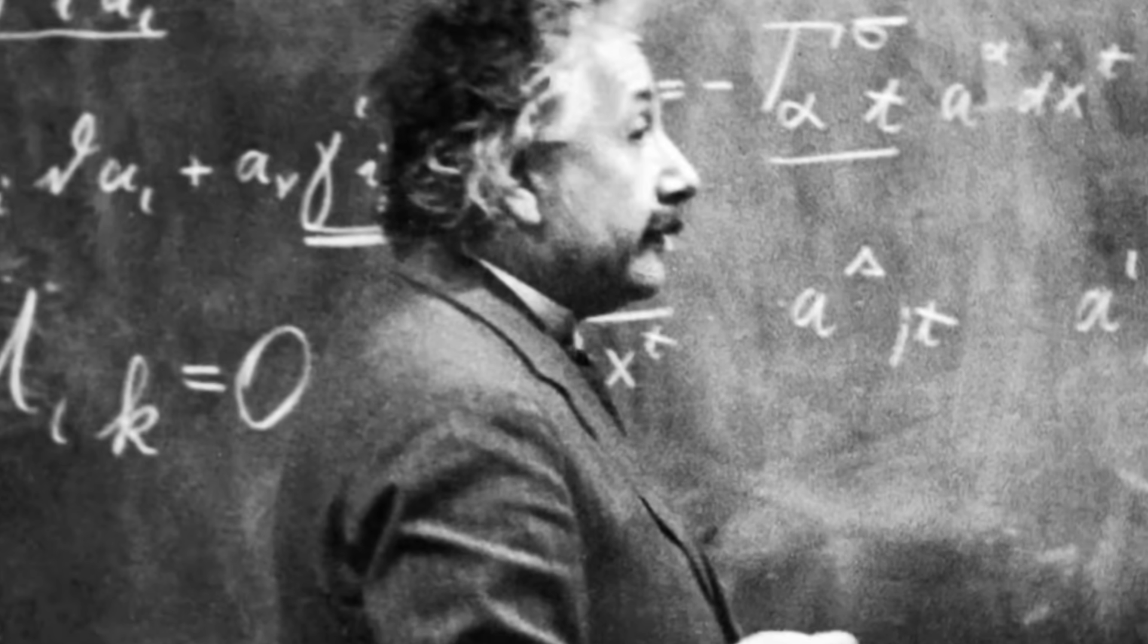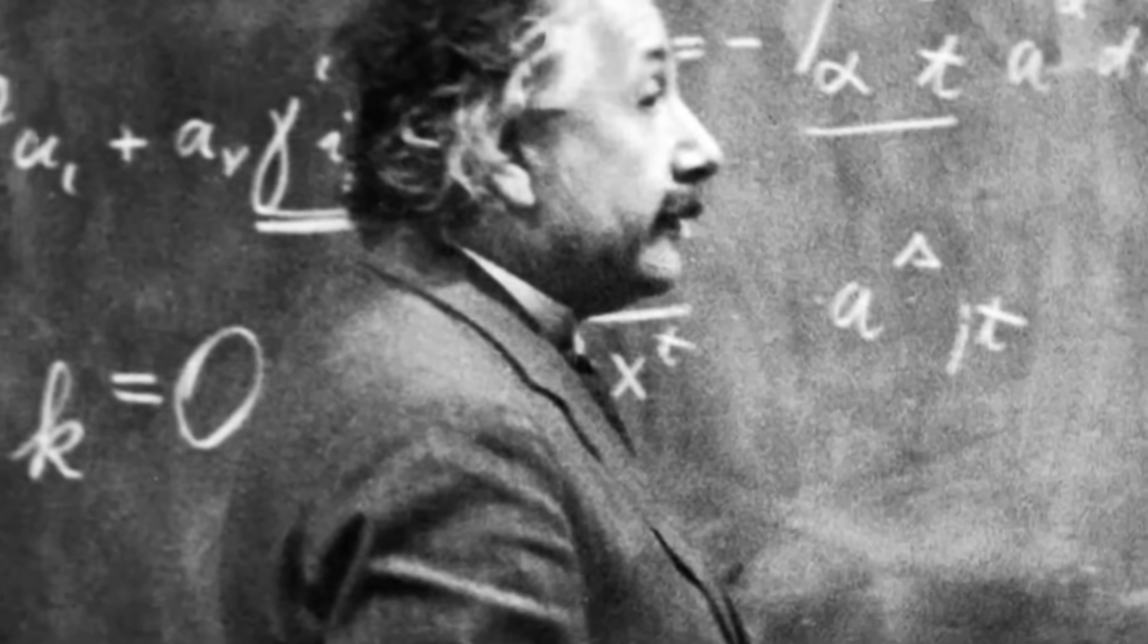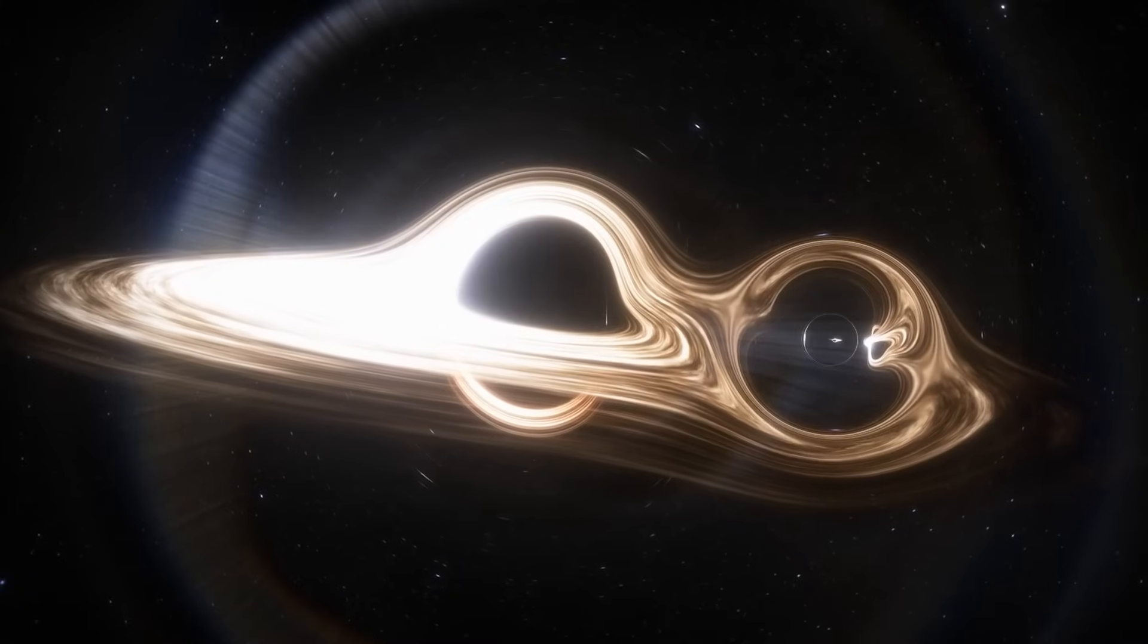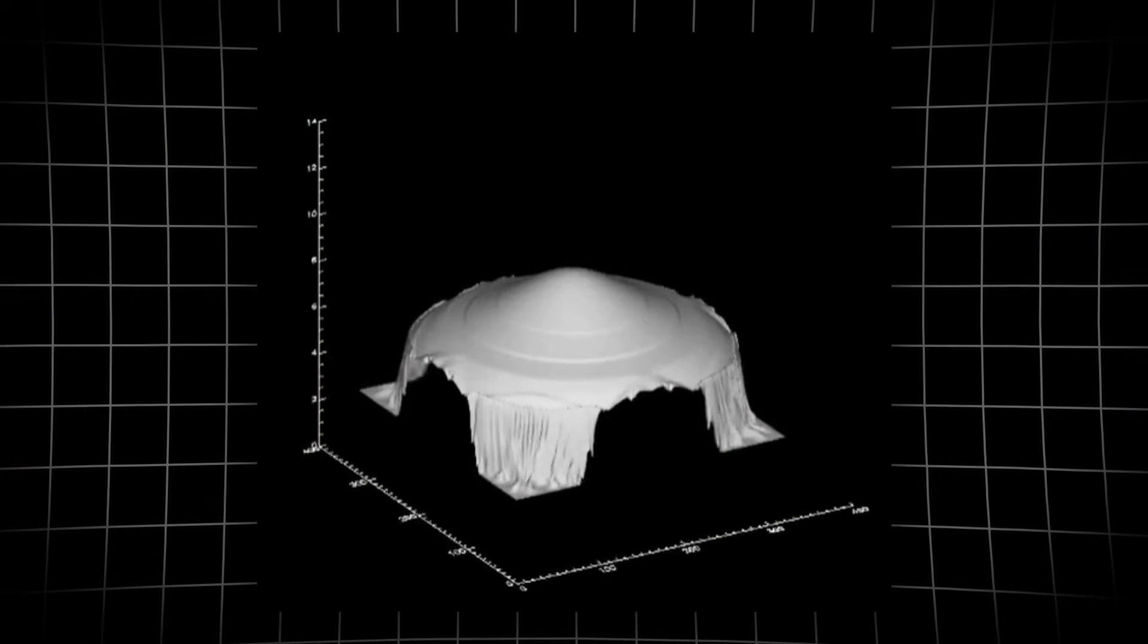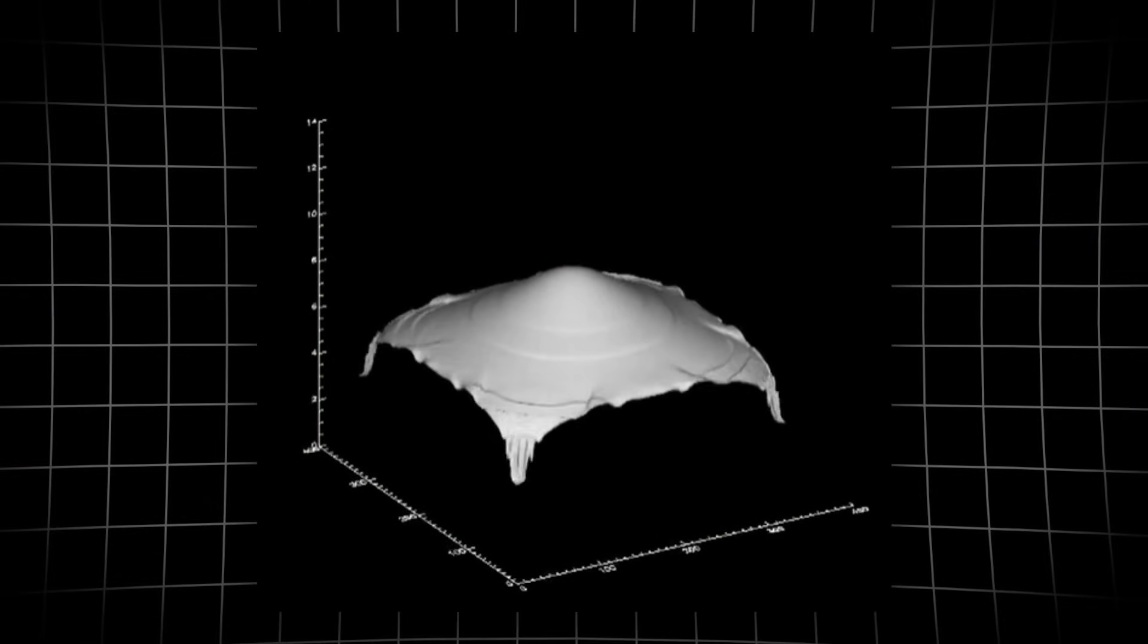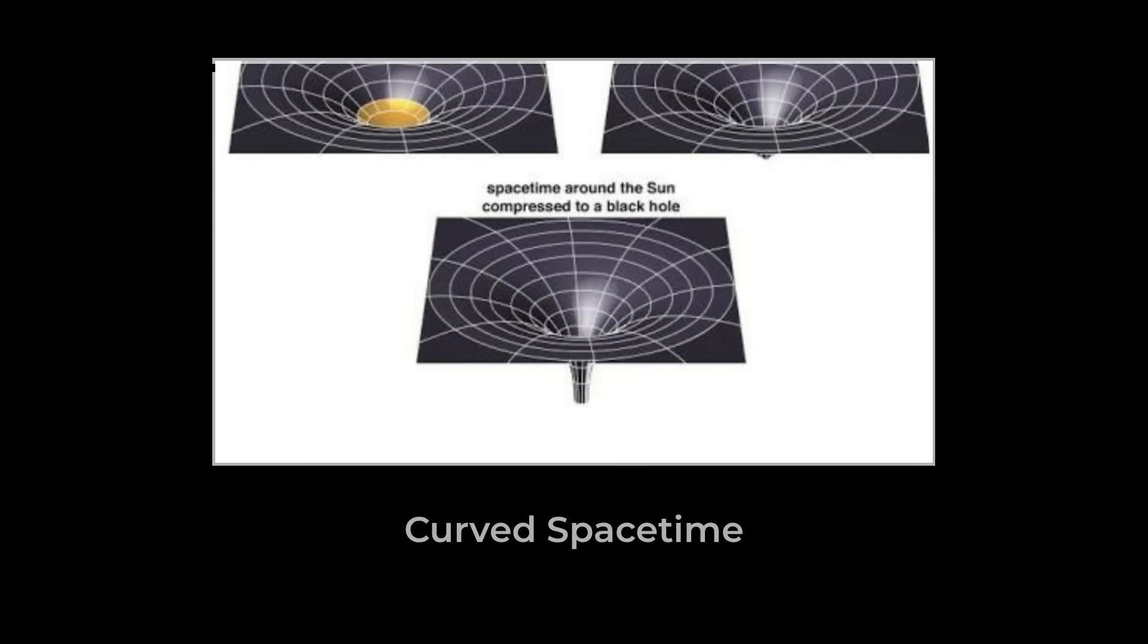General relativity, Einstein's theory from 1915, gives us the rules for how gravity shapes space and time. It's the physics that lets black holes exist in the first place. The equations are unforgiving. If you pack enough mass into a small enough region, gravity wins. Space curves in on itself, and you get a black hole. No escape, not even for light.